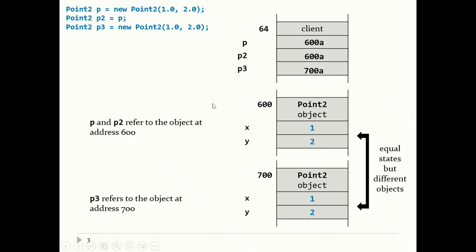If you look at what's happening in memory: the first point p is the Point2 object at address 600. When you write p2 = p, all you're doing is making a variable p2 that stores the same value as p — you copy the value into the new variable. So p2 and p both refer to the object at address 600, and there's only one point object in memory. It's not until you write new Point2 again that you get a second point object. So you have three variables but only two Point2 objects — p and p2 both refer to the first point, and p3 refers to the second.